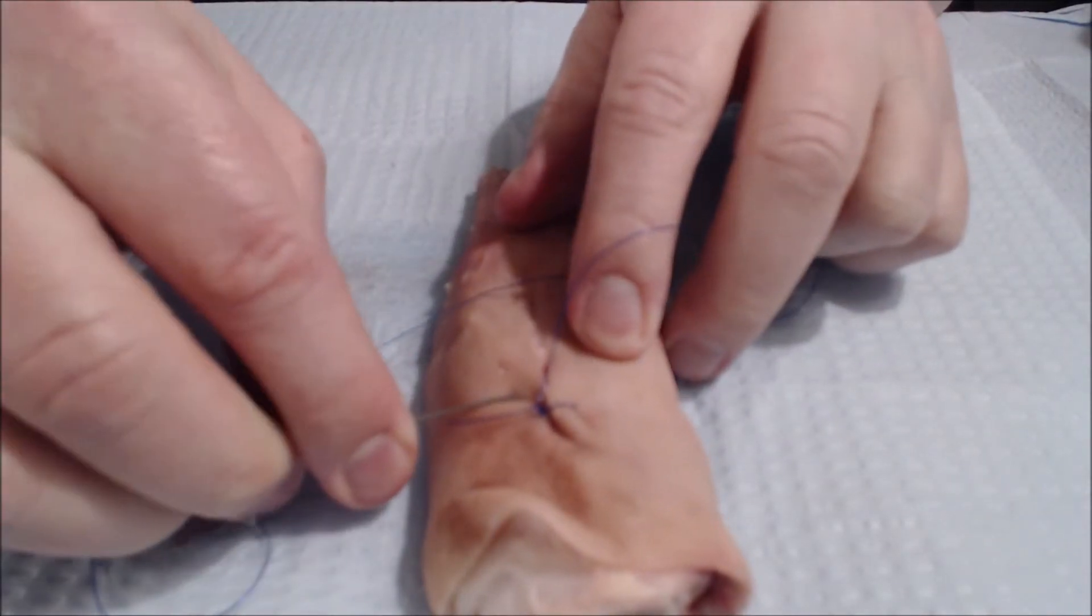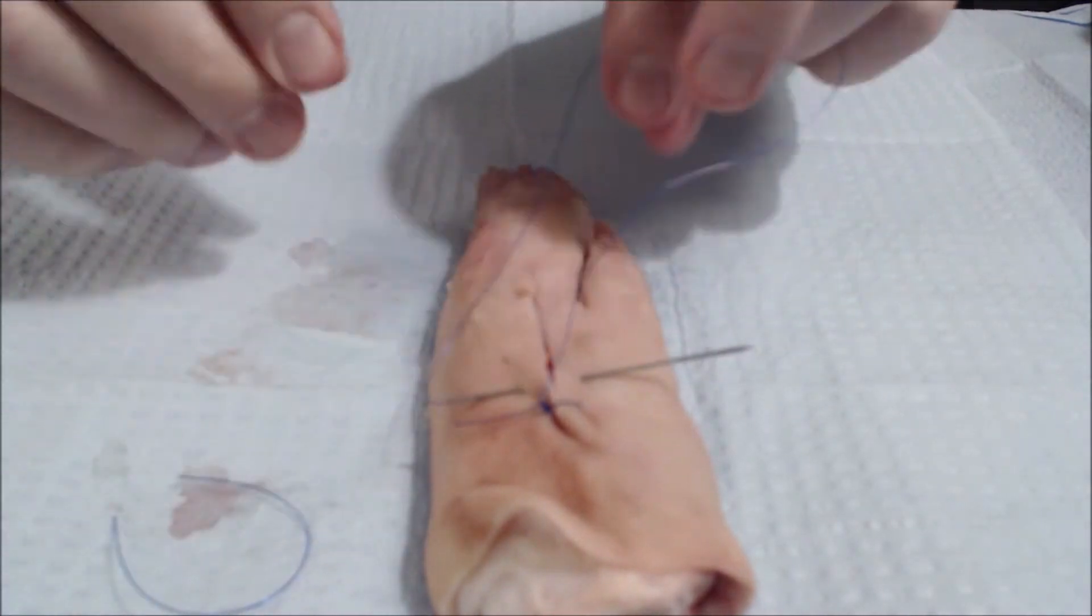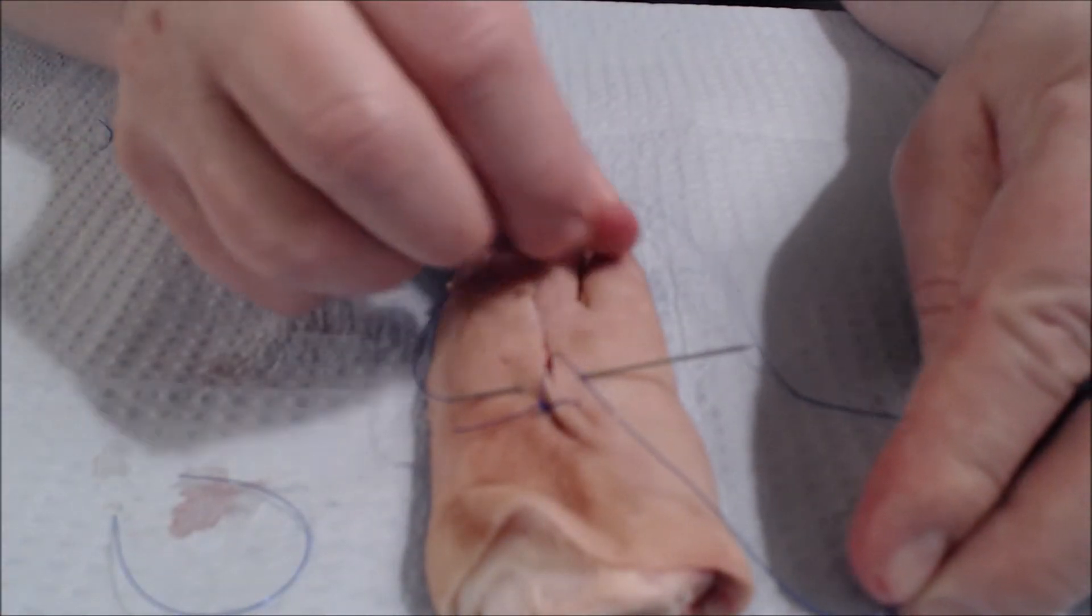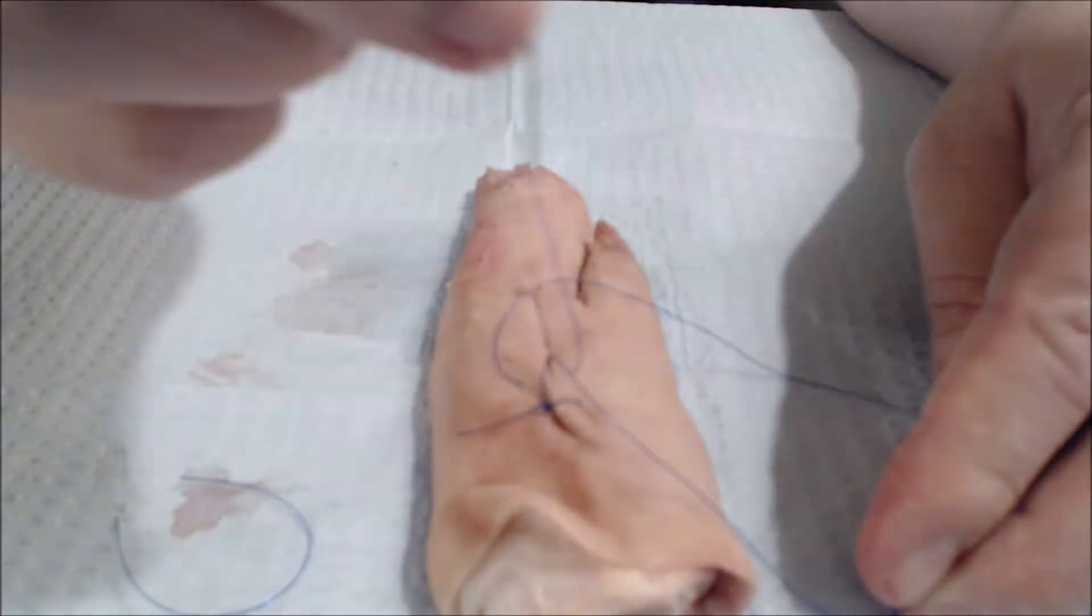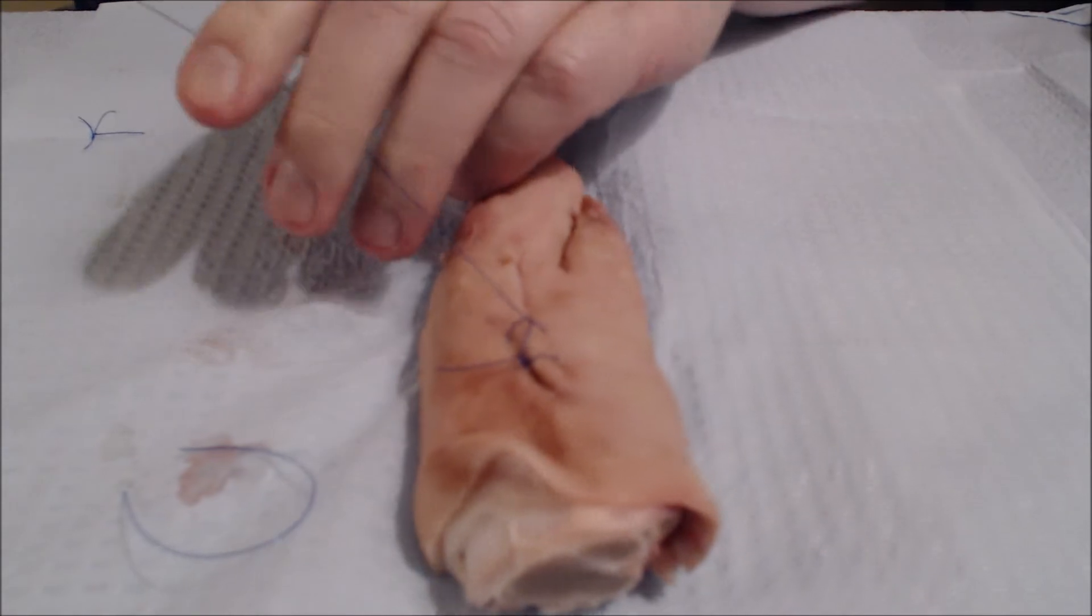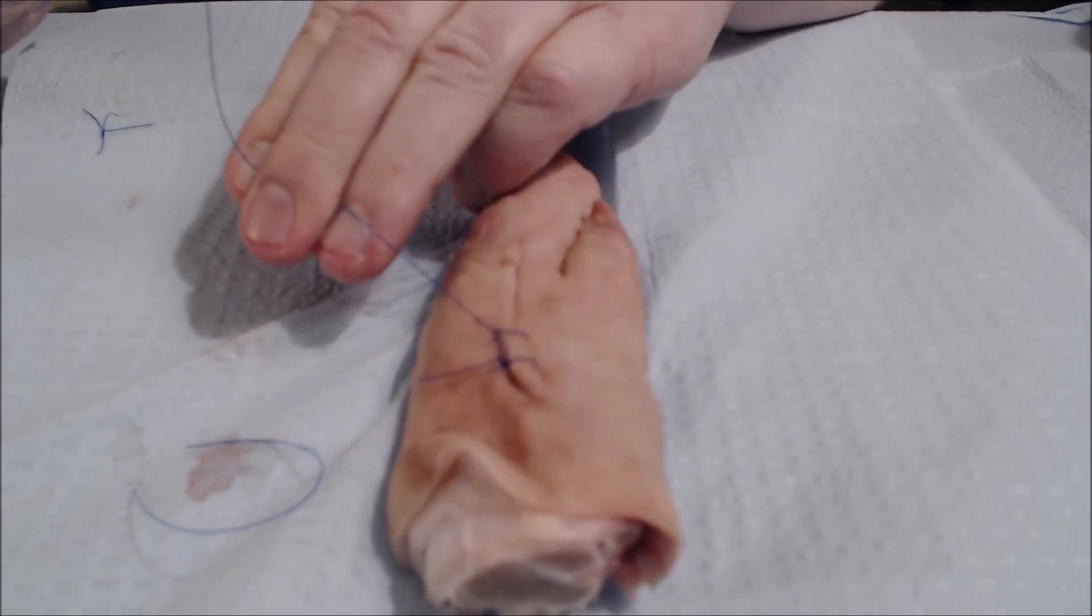Place the suture through, but the trick here is I'm going to loop the suture around and pull the needle out through the center of it. And watch what happens. It locks like that.